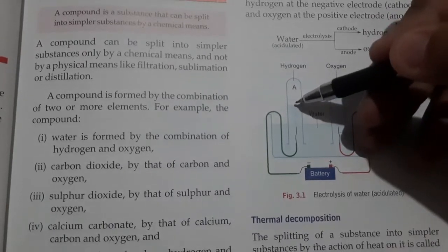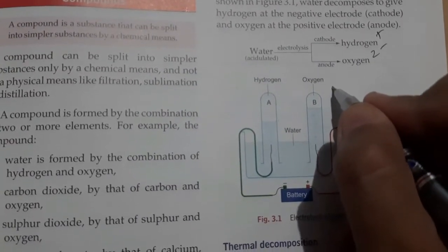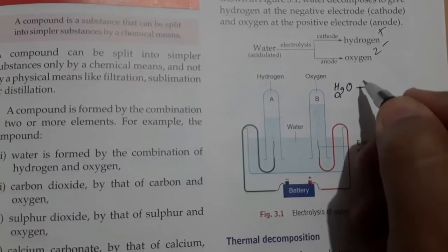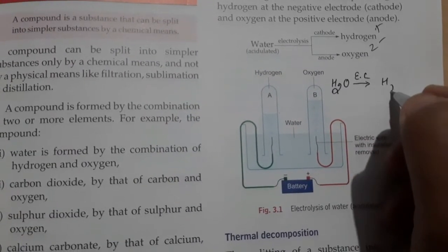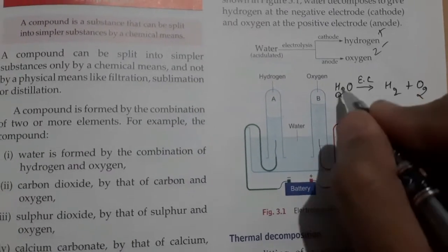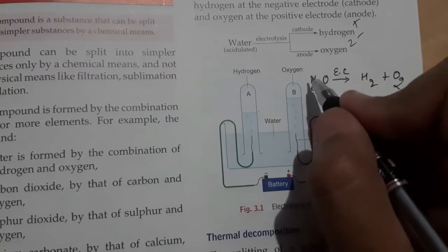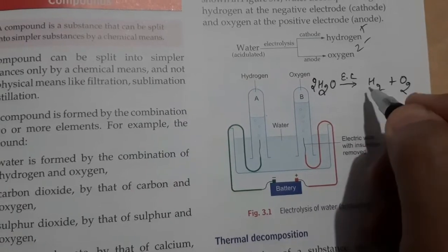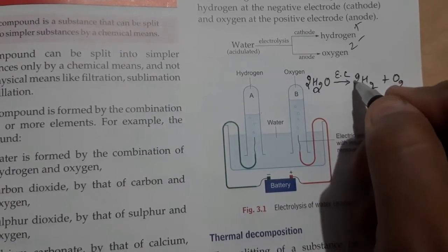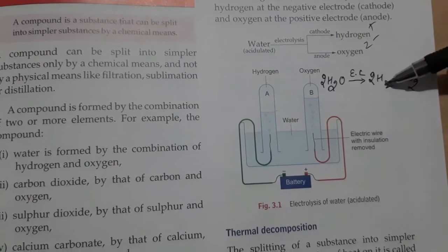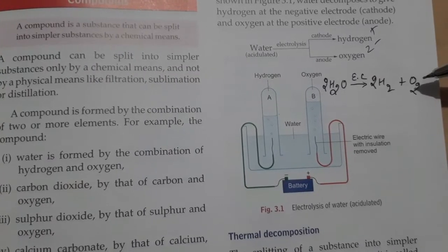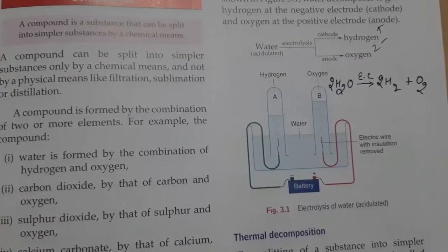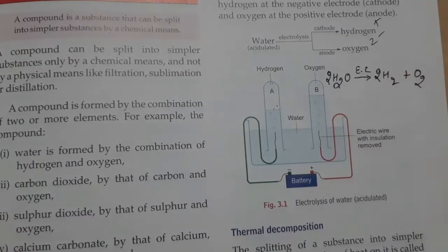Many students ask why there is more hydrogen and less oxygen. If we see the reaction of electrolysis of water: H2O under electrolysis gives H2 + O2, but this equation is not balanced. To balance it we multiply H2O by 2. Now oxygens are balanced but hydrogen is still not balanced, so we multiply H2 by 2. The reality is that two volumes of hydrogen are produced for every one part of oxygen — so hydrogen is double. That is why there is more hydrogen and less oxygen.